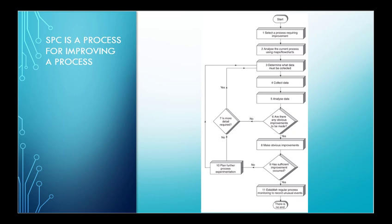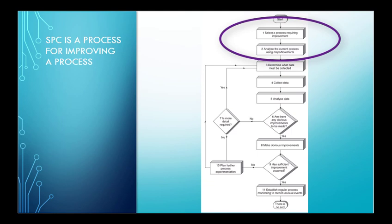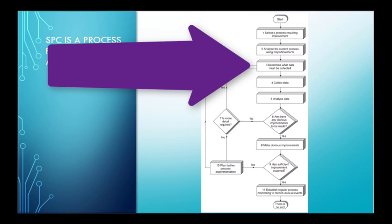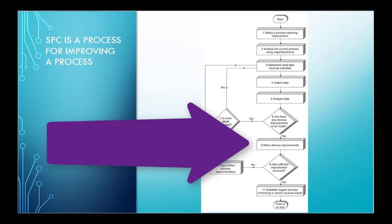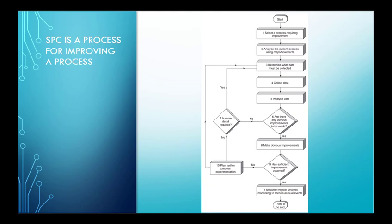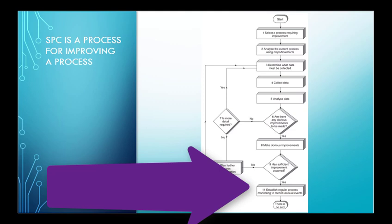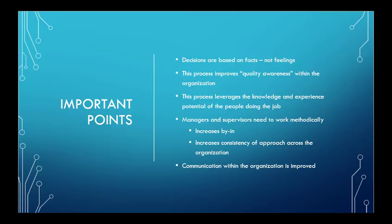Statistical process control is a process for improving a process. It advocates that we start by understanding what our current process is, then we plan what data is going to be insightful, and we gather that data, and we analyze that data, and we use that data to make improvements. When we make improvements, we check to see if the improvement was actually an improvement, and we feed through that loop until everything is of sufficient quality. Then we establish regular data gathering to ensure we continue to maintain that level of quality and efficiency, and that goes on forever.